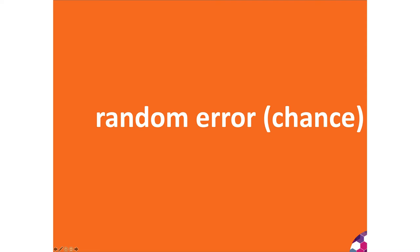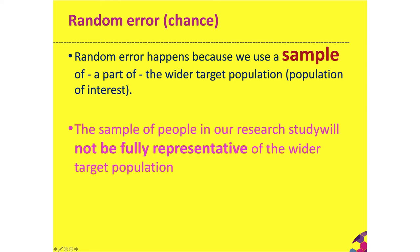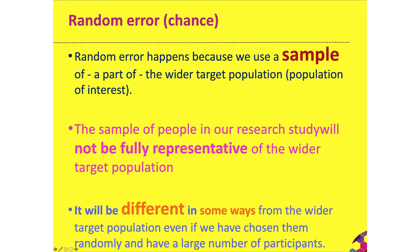Now let's move on to random error. Random error happens because we use only a sample — a part of the wider target population — and because of that, the sample in our research study will not be fully representative of the wider target population. It will be different in some ways even if you have chosen participants randomly and even if you have a large number. So there will always be random error; the question is whether it is large or small.